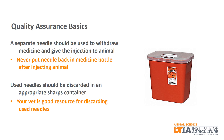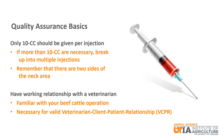Used needles should be discarded into an appropriate sharps container. An empty milk jug makes for a good homemade sharps container. Your vet is a good resource for discarding used needles once the sharps container is full. Regardless of route of administration, only 10 cc's should be given per injection site. If more than 10 cc's are indicated, it should be split across multiple injections — remember, the animal has two sides of the neck area. It is important to have a working relationship with a veterinarian and for them to be familiar with your beef cattle operation; this is necessary for a valid vet-client-patient relationship, or VCPR.